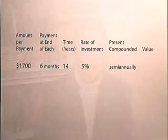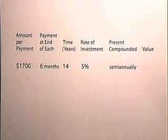The present value of an annuity is the present value of the series of equal periodic payments. Let's look at an exercise in which we calculate the present value of an ordinary annuity. We have an annuity in which $1,700 is paid at the end of each six months for 14 years into an account paying 5% semi-annually. We want to find the present value of that account.